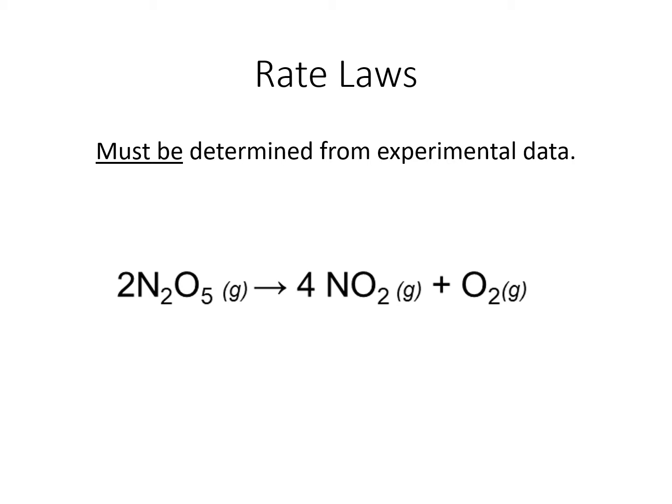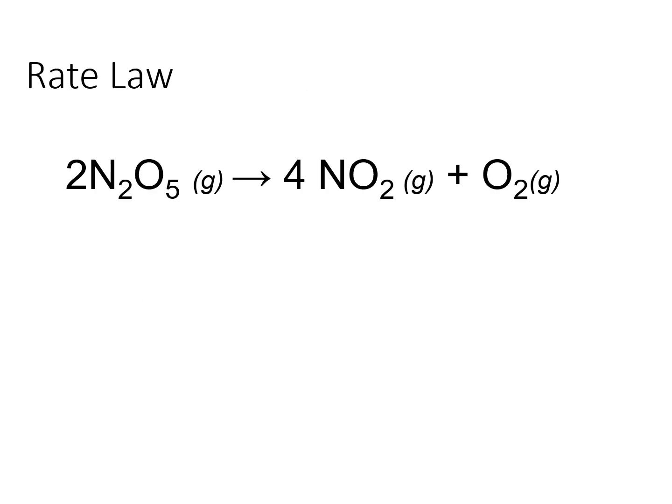Our equation today is dinitrogen pentoxide decomposing. The form of the rate law is going to look like this: rate equals a constant, the rate law constant, times the concentration of your reactant N2O5. One of the things we determine from the data is what the exponent on the concentration of the reactant is.